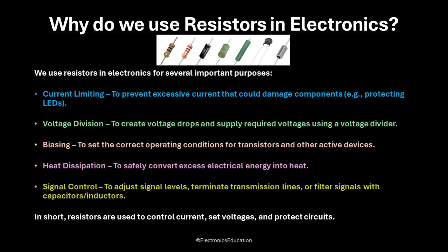So, why do we use resistors in electronics? We use resistors for several important purposes. One, current limiting — to prevent excessive current that could damage components, for example, protecting LEDs. Two, voltage division — to create voltage drops and supply required voltages using a voltage divider. Three, biasing — to set the correct operating conditions for transistors and other active devices.